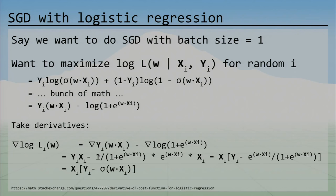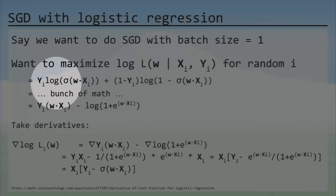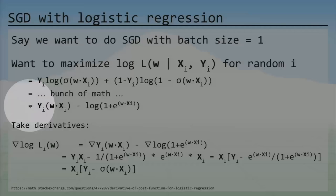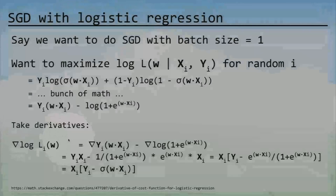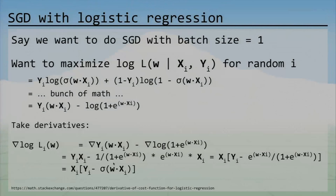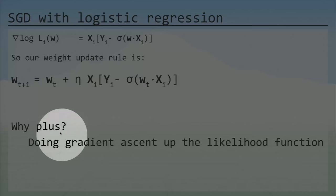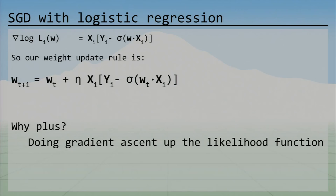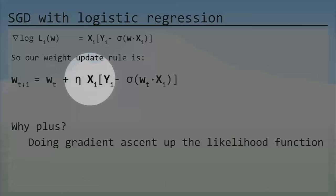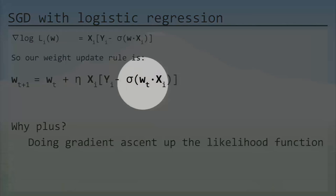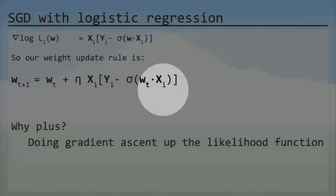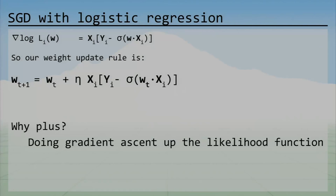For stochastic gradient descent with logistic regression using batch size one, we compute the log likelihood for a single point, take the derivative, and get the weight update rule: W(t+1) = W(t) + η * x * (y − σ(W·x)), where y is the correct label and σ(W·x) is the model's prediction. We add the gradient term rather than subtracting since we're doing gradient ascent on the likelihood.